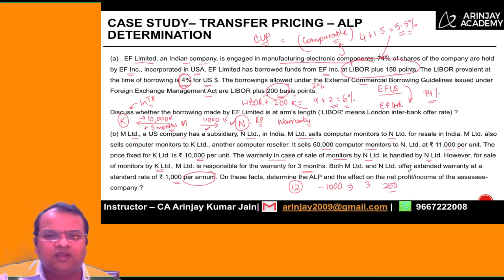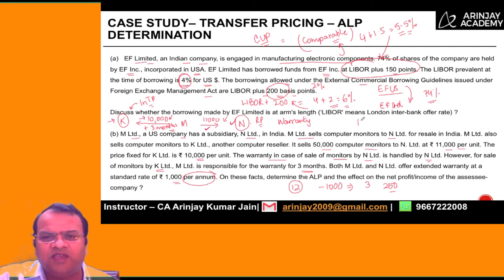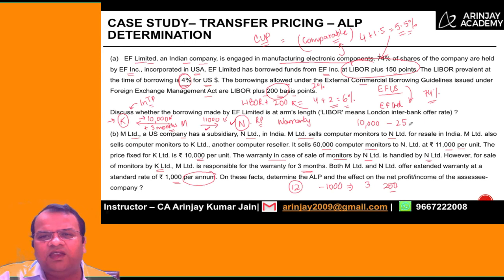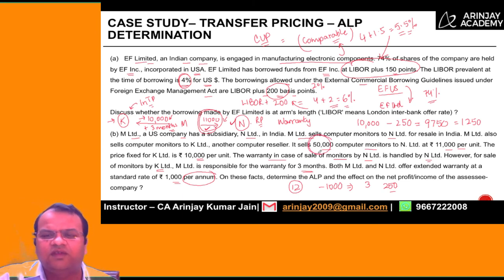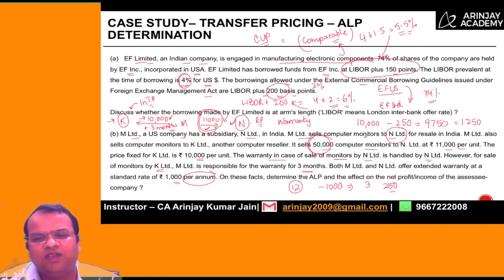To compute the arm's length price for an independent party, it will be the price at which we are selling to K minus the cost of warranty. So the arm's length price will be 10,000 minus 250, which is 9,750. But the related party N Limited has been charged 11,000. So the excess price being charged from the related party is 11,000 minus 9,750, which is 1,250. The number of computers sold is 50,000, so 50,000 multiplied by 1,250 is the amount of adjustment which will be done by N Limited in its books of account by disallowing the cost.